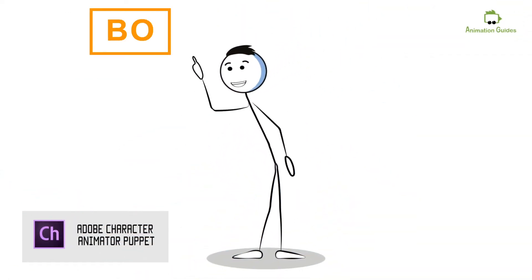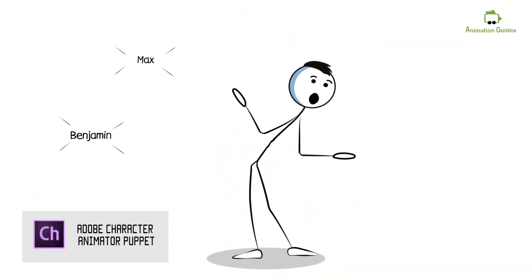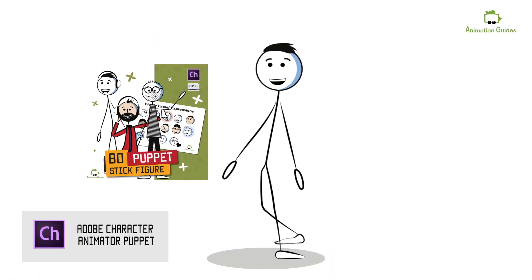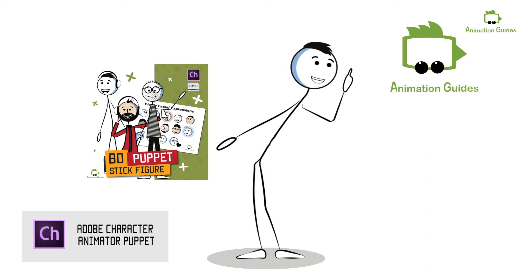Hi. My name is Bo, but you can name me whatever you like. I am a stick figure puppet for Adobe Character Animator, created by Animation Guides.